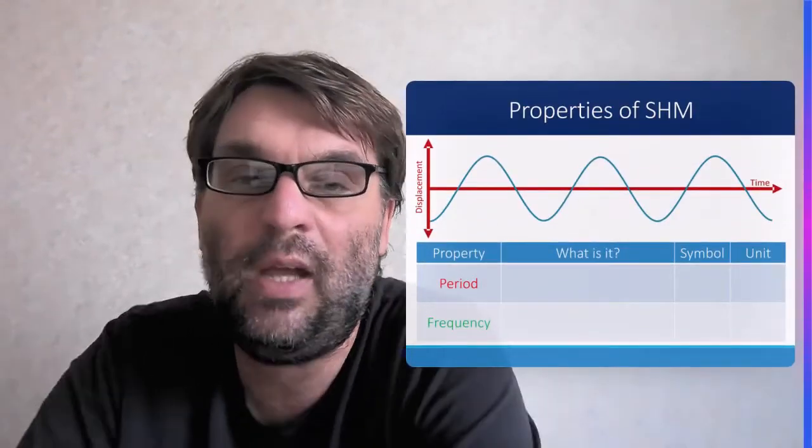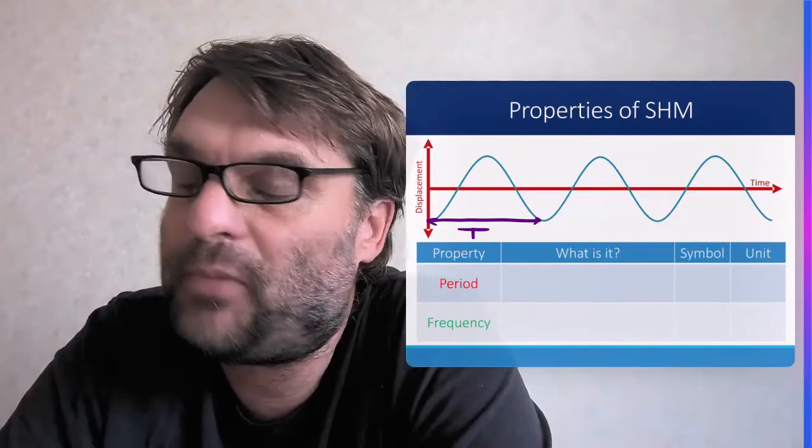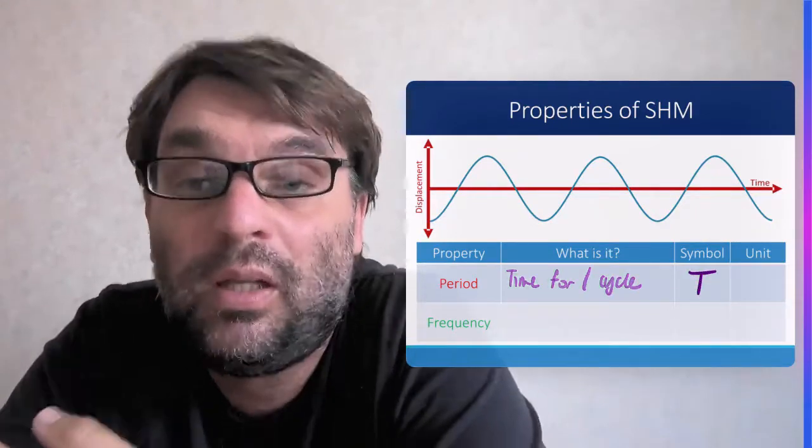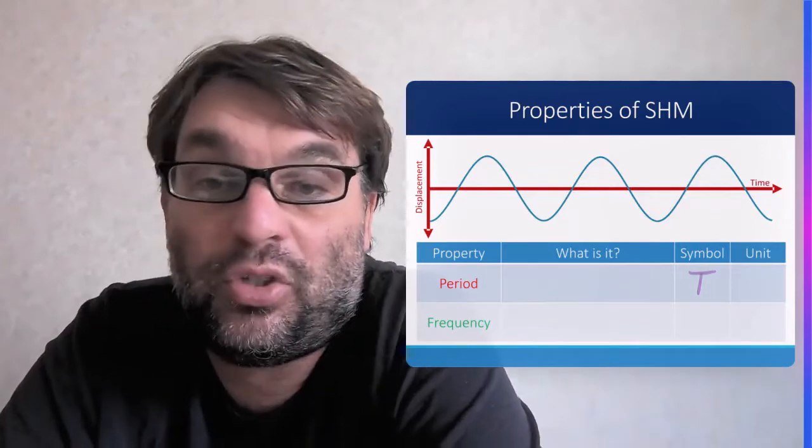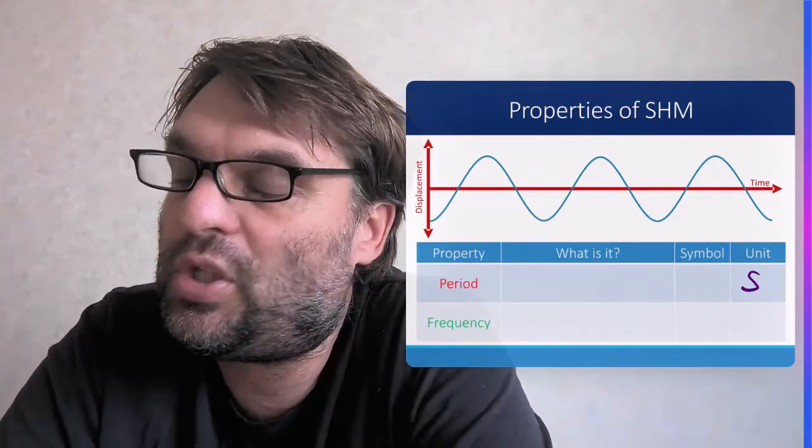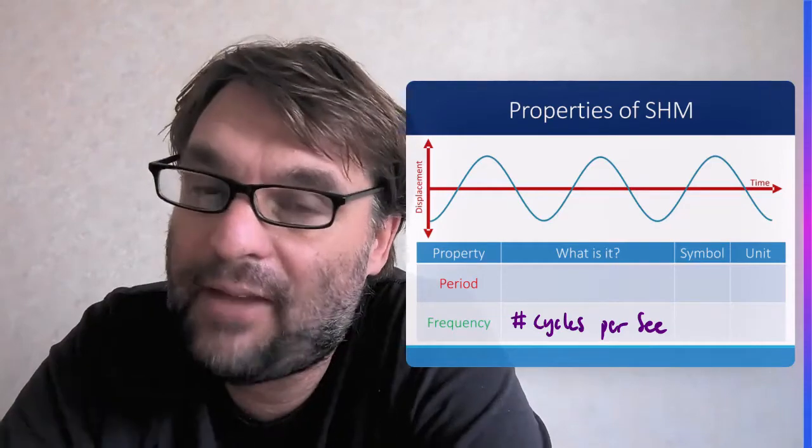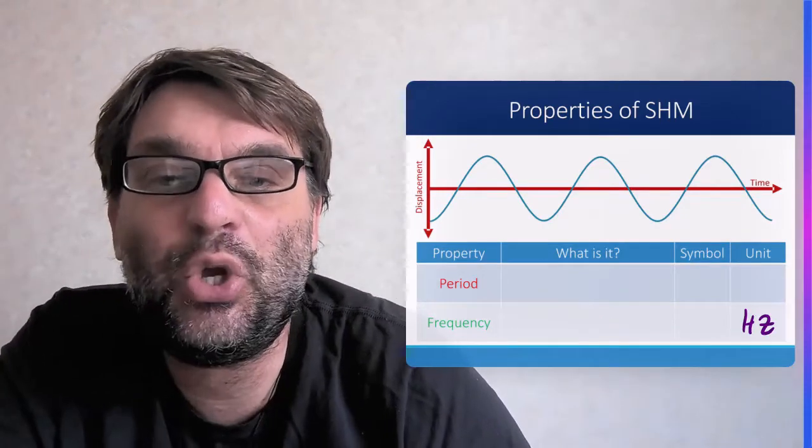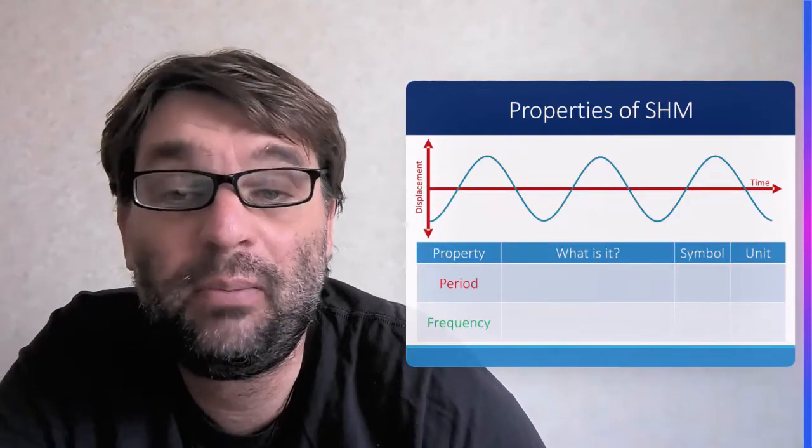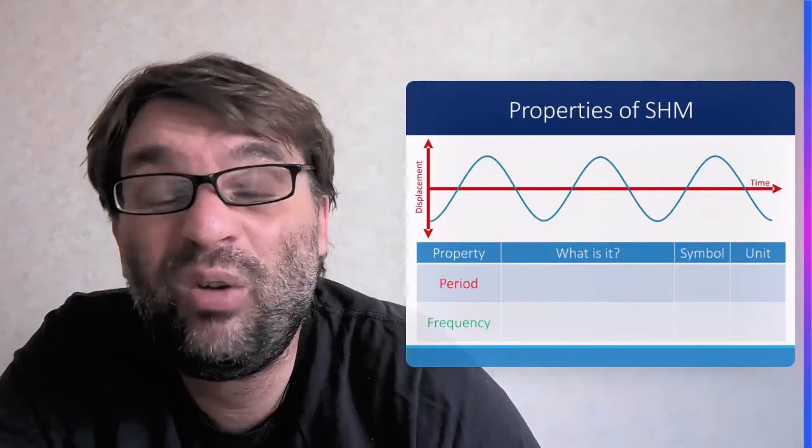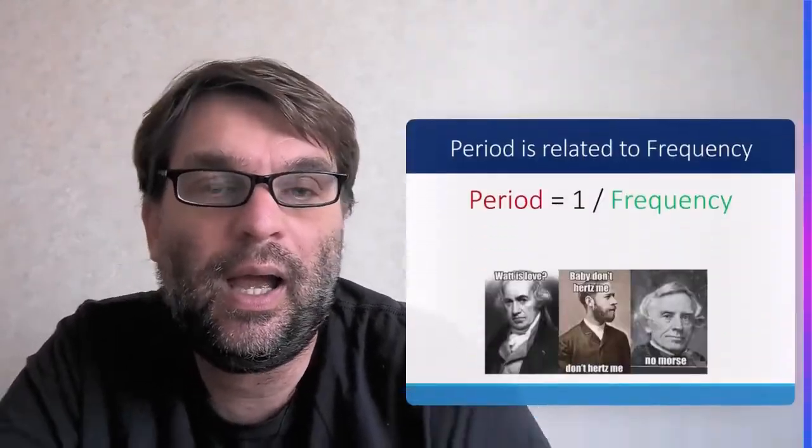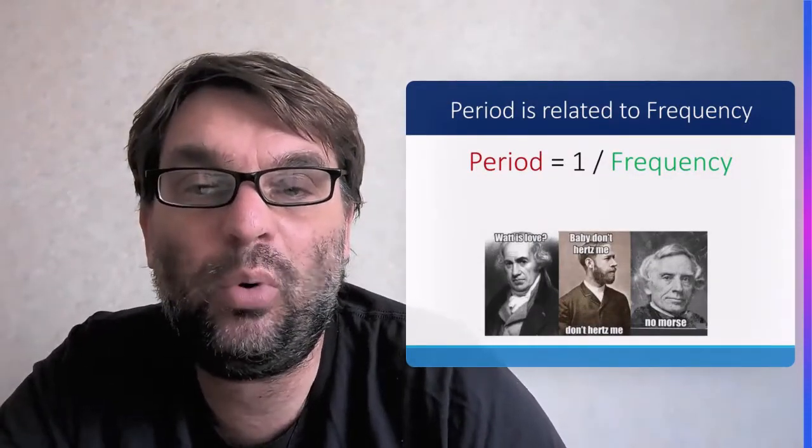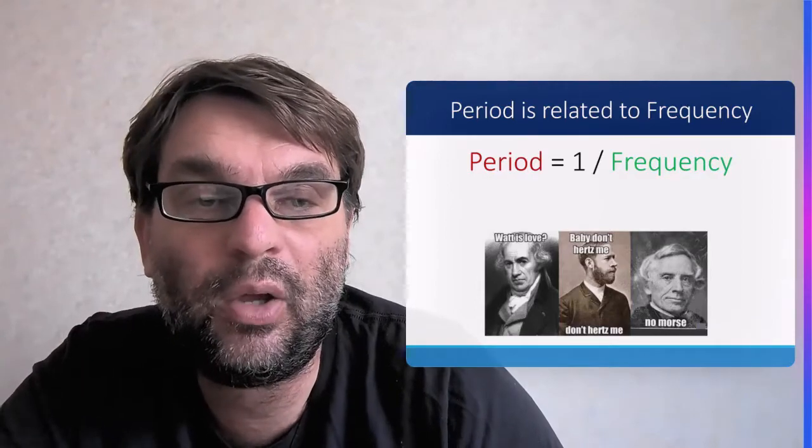In terms of the properties of SHM, we have the period. So what is it? It's the time for one complete cycle. The symbol is capital T. And its units are seconds. Then we have frequency, which is the number of cycles per second. Symbol is F. And you may have heard it already. Its units are hertz, which you might have seen possibly with radio or television. And the period is one over the frequency. That's an important equation to remember.